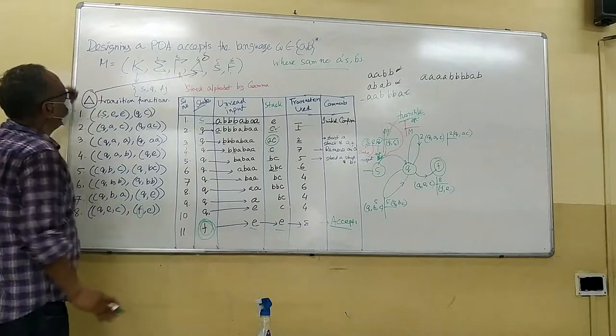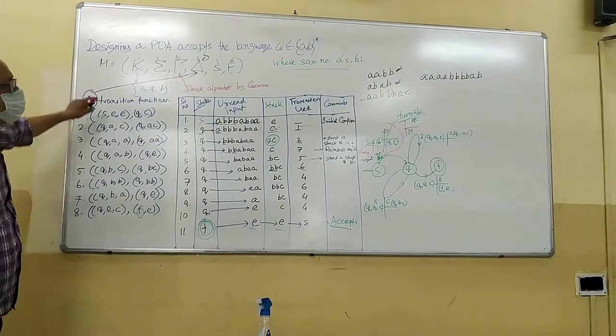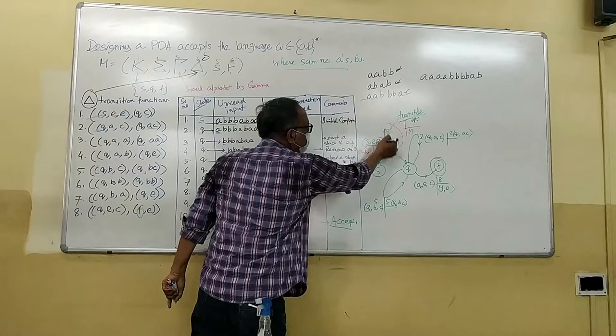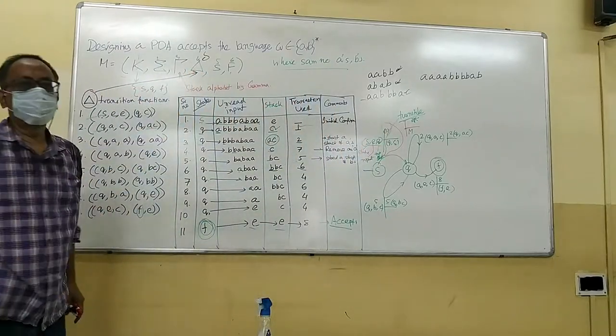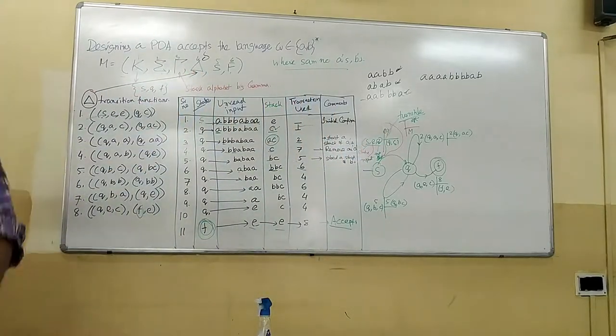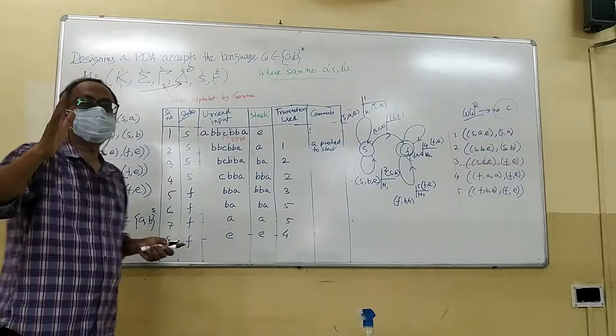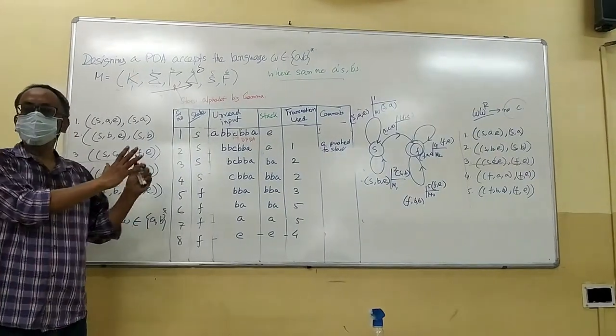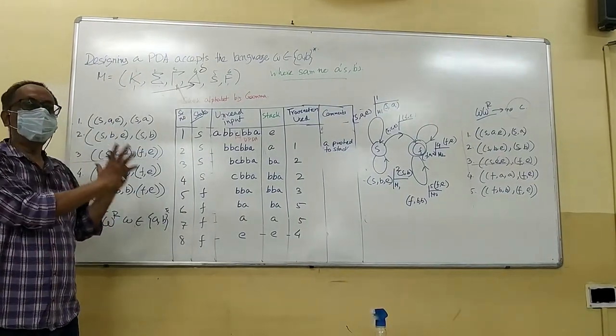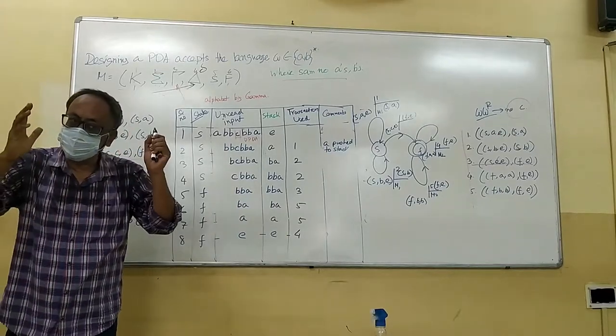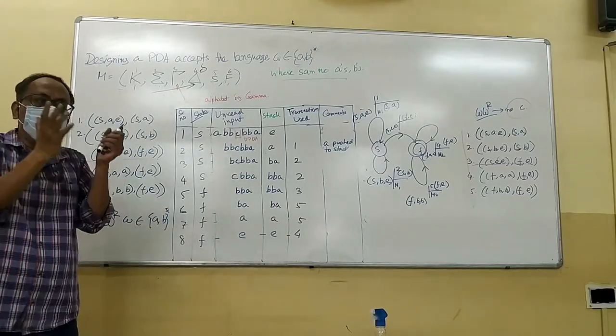Okay. So, we are at module three. Whatever we have done, only the concept. This is the symbol we will be used. Thank you for being. Any question? Thank you. The first, the repetition we have, number of A's and number of B's are same in a deterministic PDA. We all know.